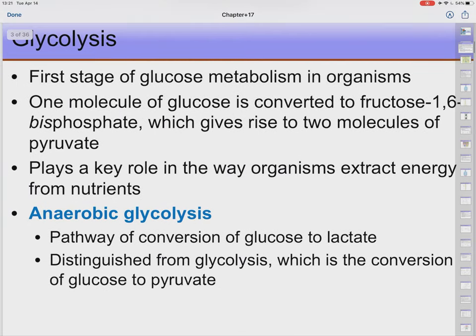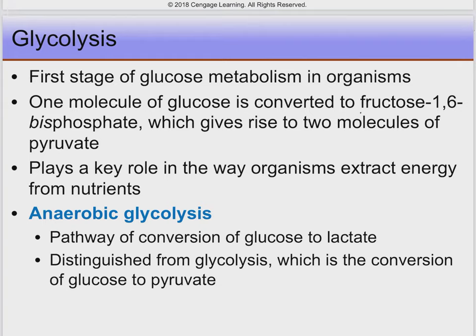Glycolysis is the beginning of sugar breakdown. Once we've got our sugars into a glucose form, we can start with glycolysis. Glycolysis is going to have about 10 reactions, and this paves the way for chapter 19, which will be the citric acid cycle — what we do because we are aerobic organisms. But glycolysis is shared even with anaerobic organisms that use glucose, and we'll go over the differences towards the end of this lecture.